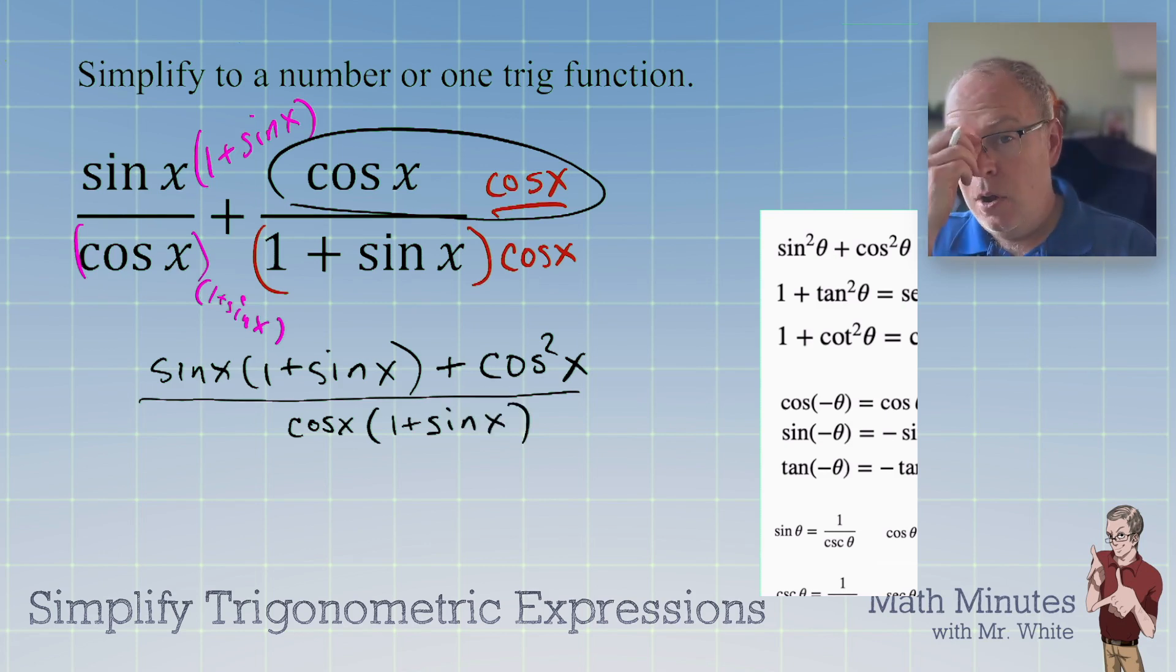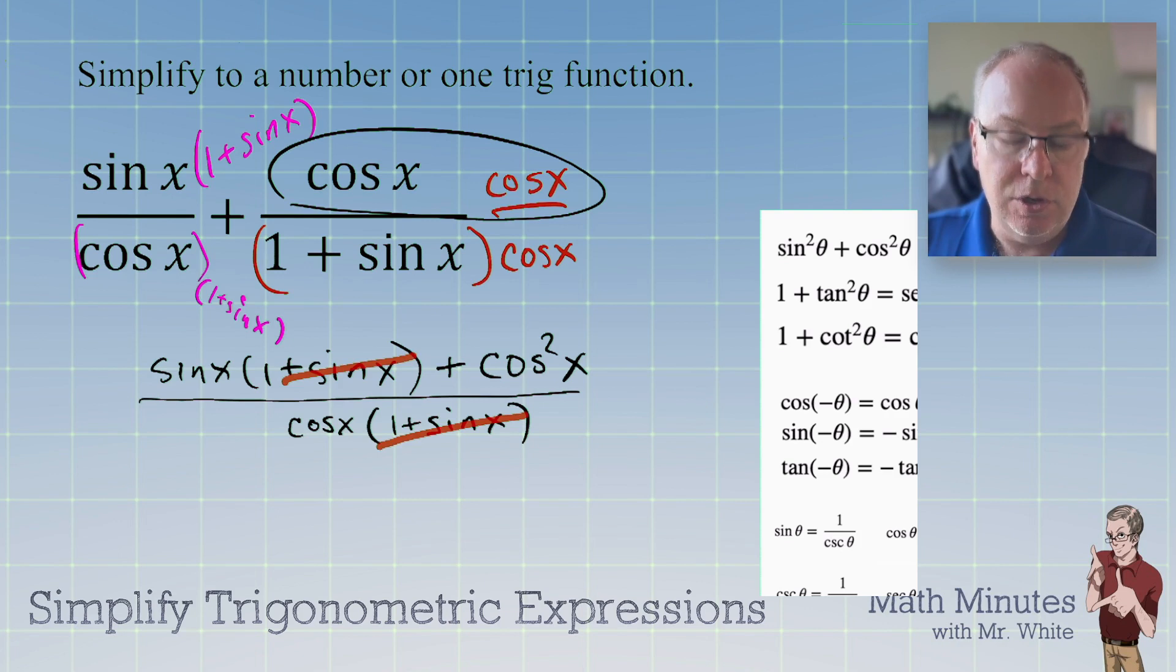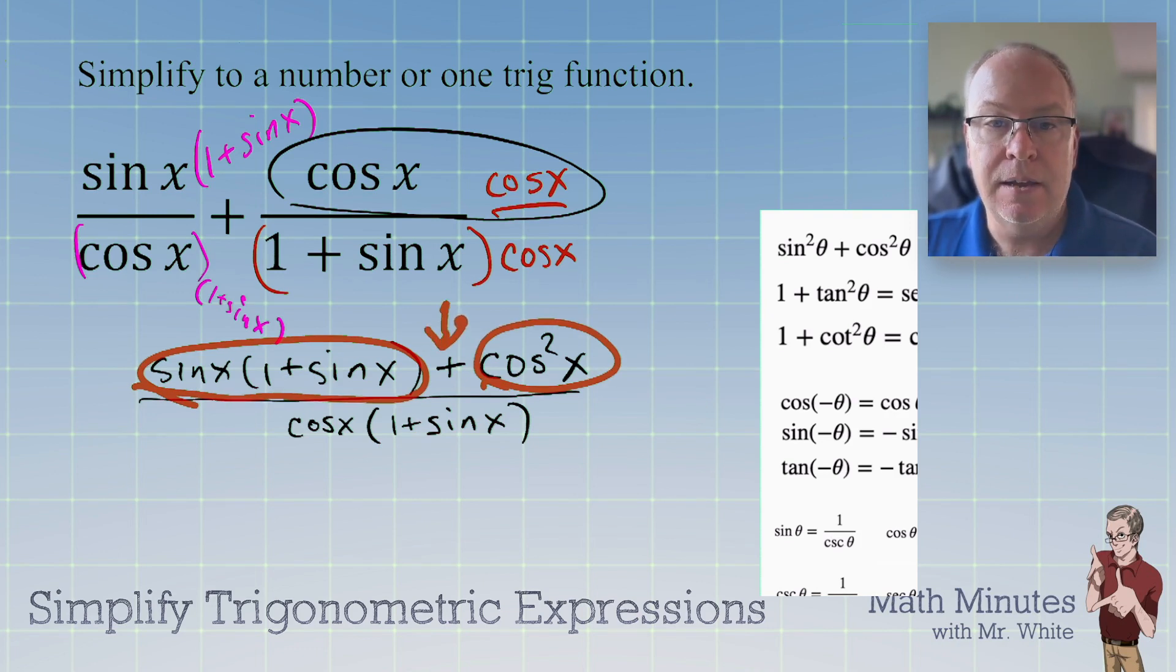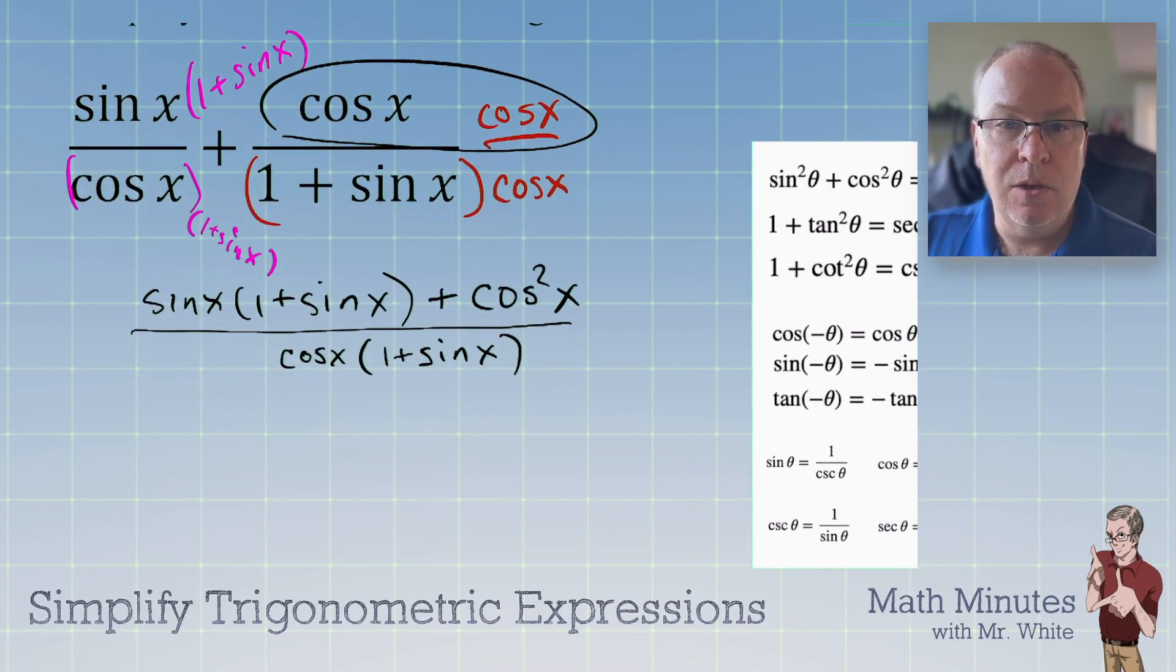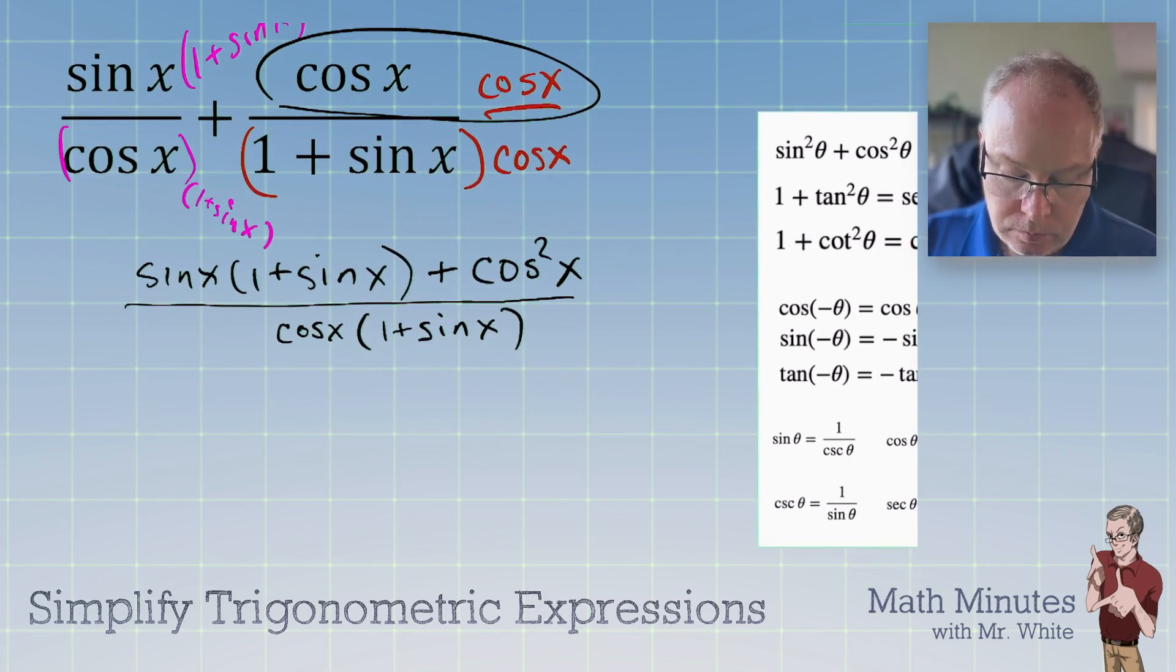Now, right here, I know that someone's hand is going up and saying, Mr. White, can I cancel right now? Can I cancel these two? Absolutely not. And the reason is, is because the top is two terms separated by a plus sign. So, when you cancel things, you cannot pick and choose and cancel terms. You can only cancel factors. So, right now we have one factor on the top and that doesn't match a single thing on the bottom. But there is something we can do. Do you see what we can do?